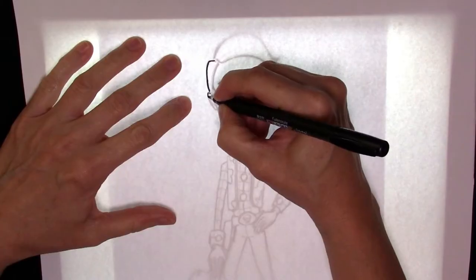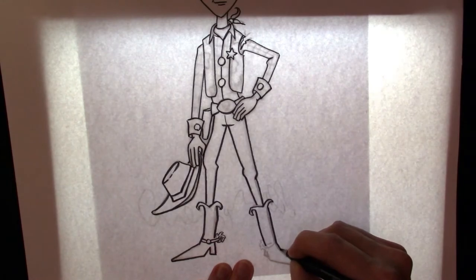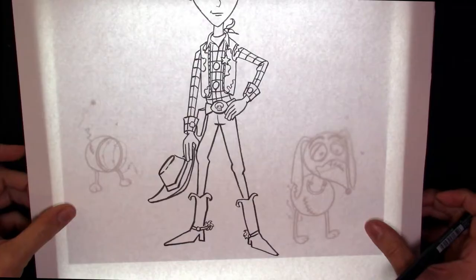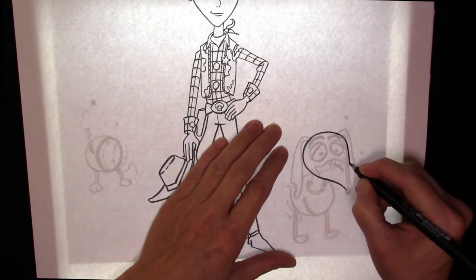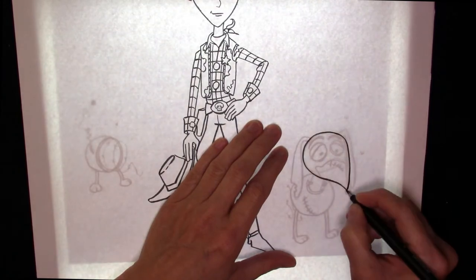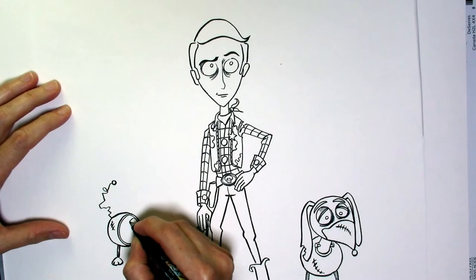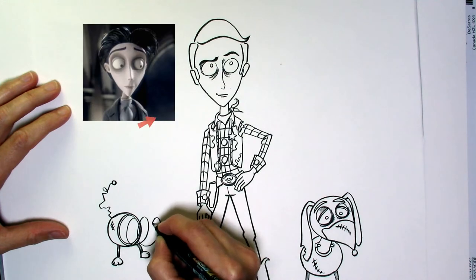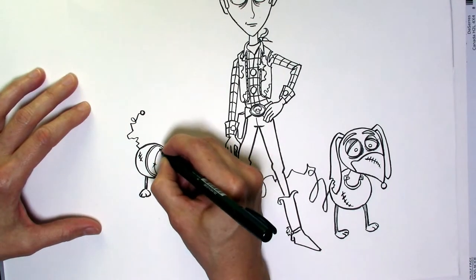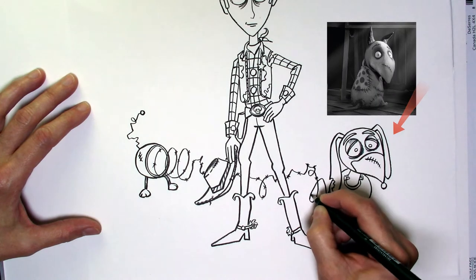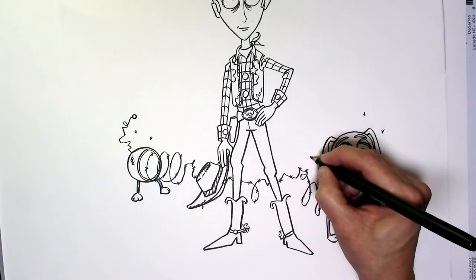Once I'm happy with the rough sketch, the lines are really messy, so I pull out the light box and do the inking by tracing my drawing. I'm using Victor from The Corpse Bride as inspiration for Woody, and the dog from Frankenweenie as the inspiration for Slinky Dog.